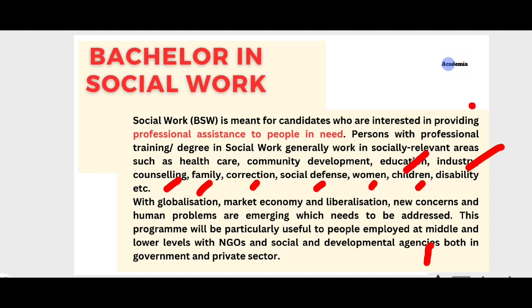When you do a Bachelor in Social Work degree, along with theory classes, you will also be given field work, which will happen two times per week. This way your bachelor's degree will be completed in 3 years, in which you will learn about human dimensions, human relationships, government schemes, NGO schemes, fund collection and distribution, thematic area selection, and the impact on society — both theoretically and practically.